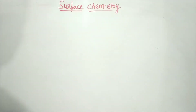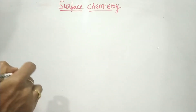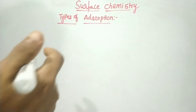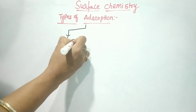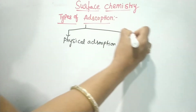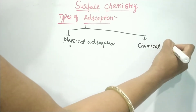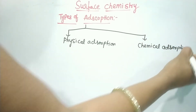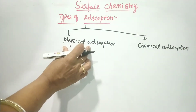Hi, hello everyone, welcome to chemistry class. Today we are going to discuss the types of adsorption — physisorption and chemisorption — and the differences between them. There are two types of adsorption: physical adsorption and chemical adsorption.